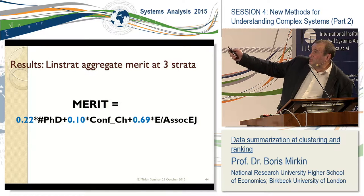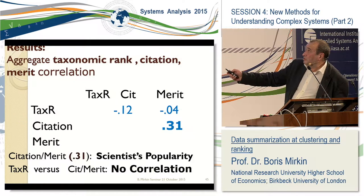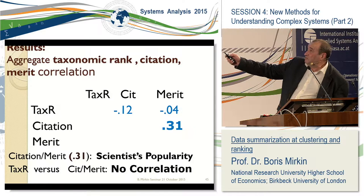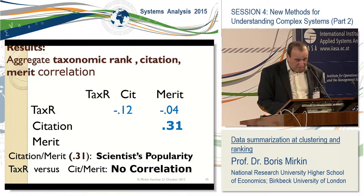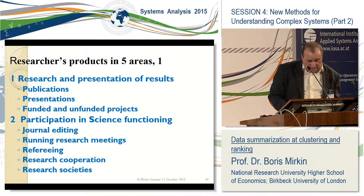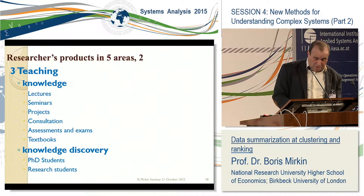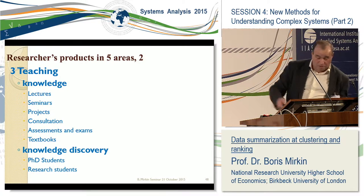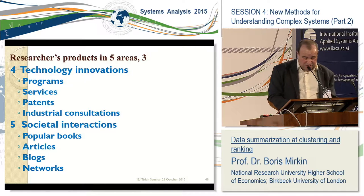Universities are starting using the Hirsch index as well. The merit features we collected include: number of PhDs supervised, number of conferences chaired, and number of editorships. The aggregate citation and merit measures have some correlation, which I consider relates to popularity.